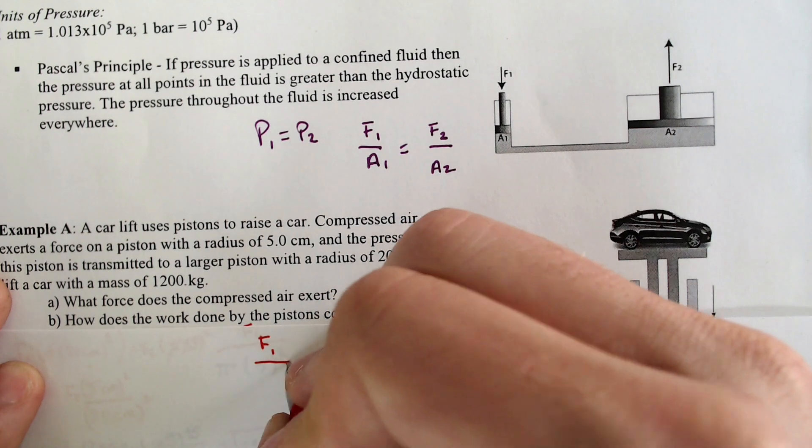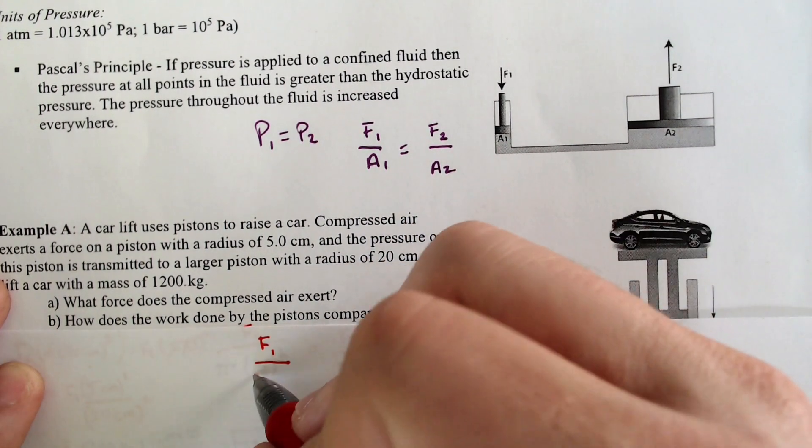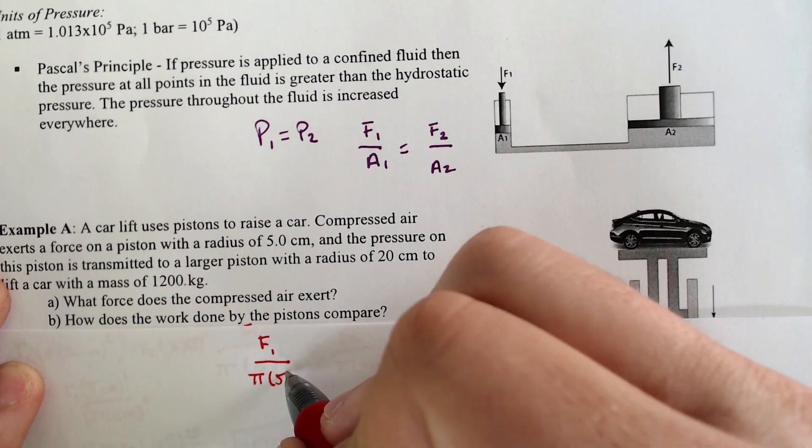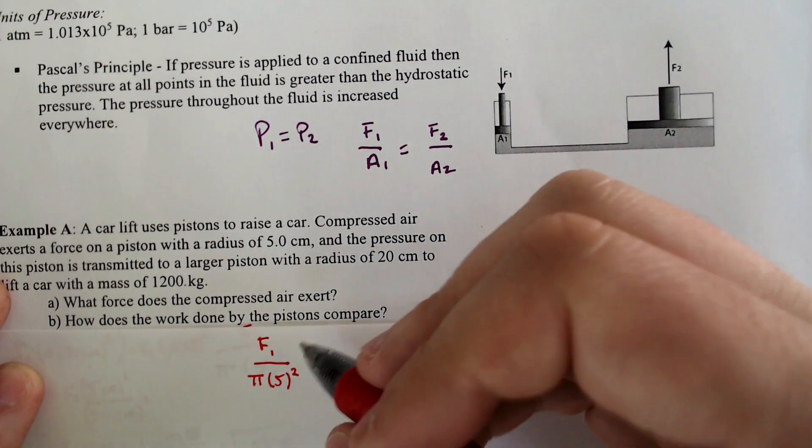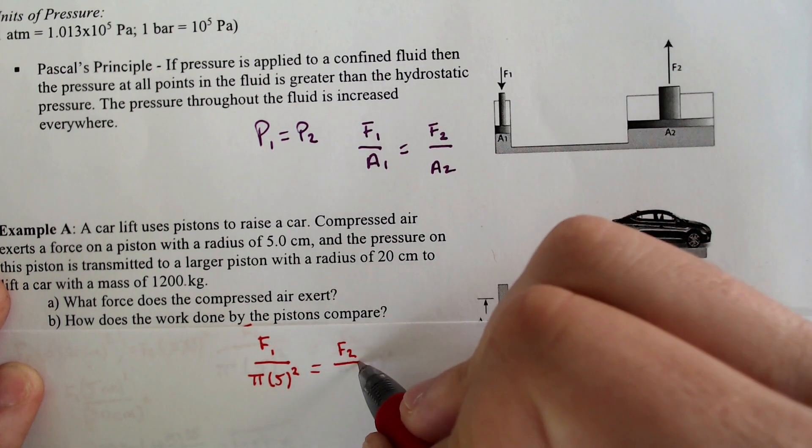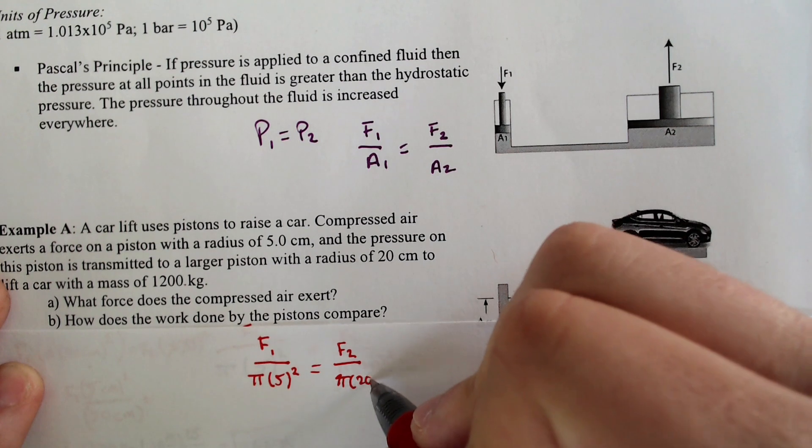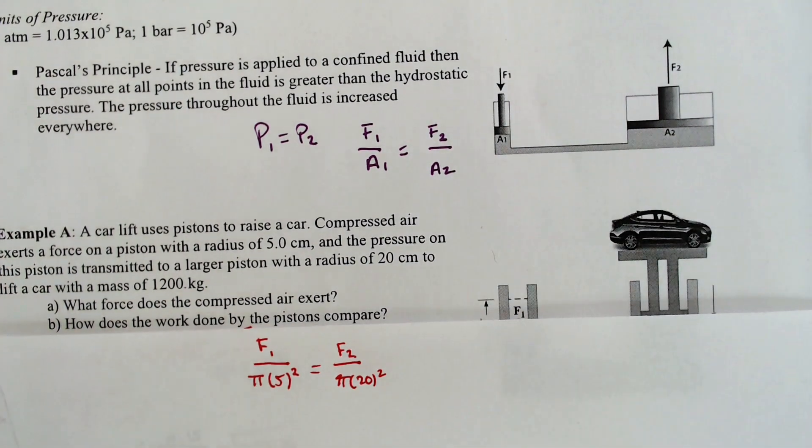Force 1 is area of 1. That would be pi times 5 squared. And force 2 is right here. And that would equal the area of 2. That would be pi times 20 squared. And it's pi r squared because we do have a piston.